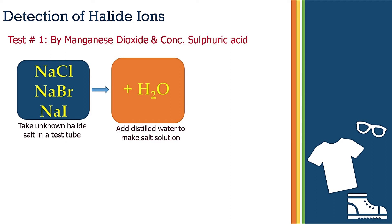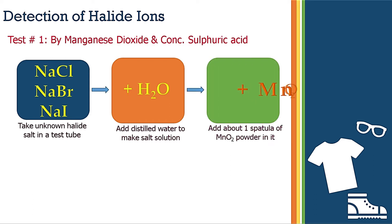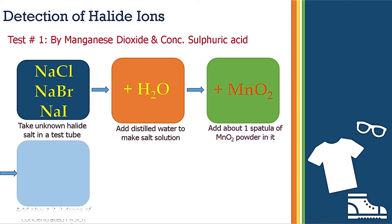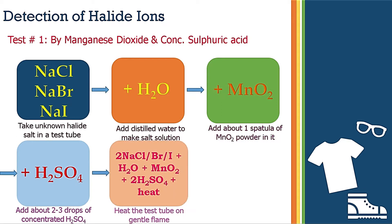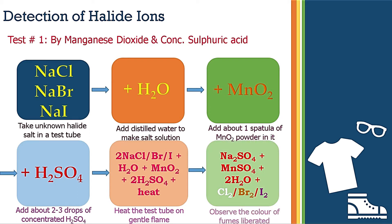Take the unknown salt in a test tube and add distilled water to make a salt solution. Then add about one spatula of manganese dioxide powder — this is a black colored powder. Then add two to three drops of concentrated sulfuric acid into this mixture. Finally, heat this mixture. The salt, water, manganese dioxide, and sulfuric acid will combine together due to heat.